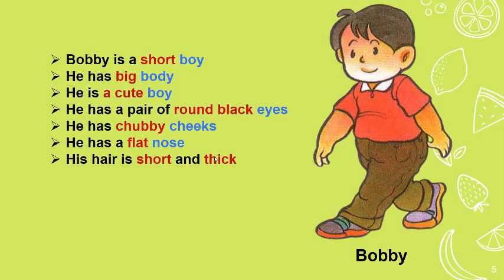Now we come to Bobby. Bobby is a short boy — anak yang pendek. He has a big body — tubuhnya besar. He is a cute boy — imut. He has a pair of round black eyes — matanya bulat dan hitam. He has chubby cheeks — pipinya tembem. He has a flat nose — hidungnya pesek. His hair is short and thick — rambutnya pendek dan tebal.